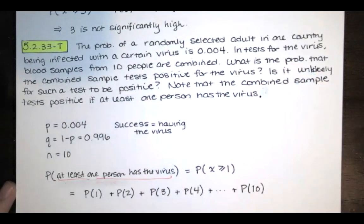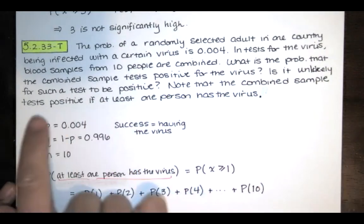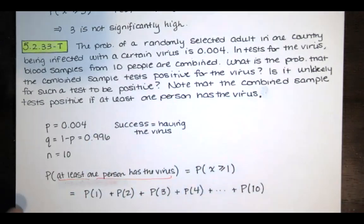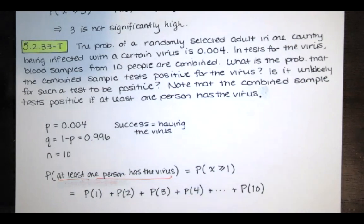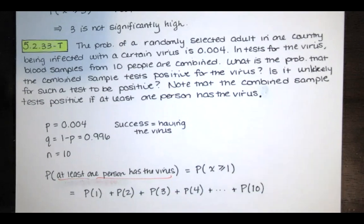The question asks for the probability that a combined sample tests positive for the virus. The combined sample tests positive if at least one person has the virus, so we need to find the probability that X is greater than or equal to one. That's equal to the probability that exactly one person has the virus plus two, three, all the way up to 10 people.